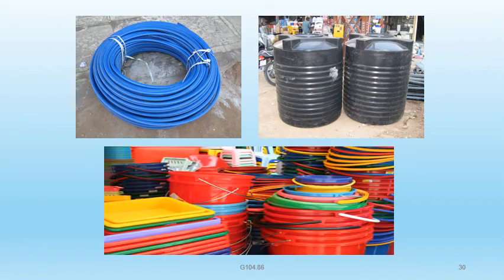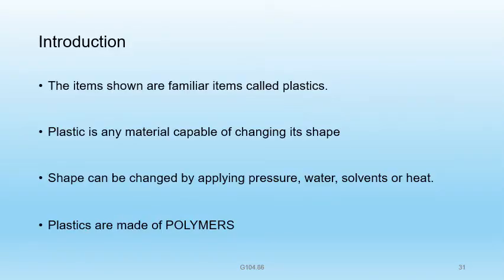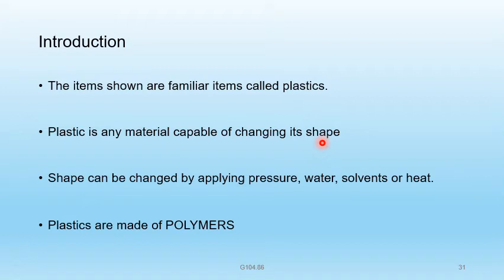Looking at pictures of plastic pipes, water tanks, buckets, chairs, and tools — all these are familiar items made of plastics. Plastic is any material capable of changing its shape. Shape can be changed by applying pressure, water, solvents, or heat.